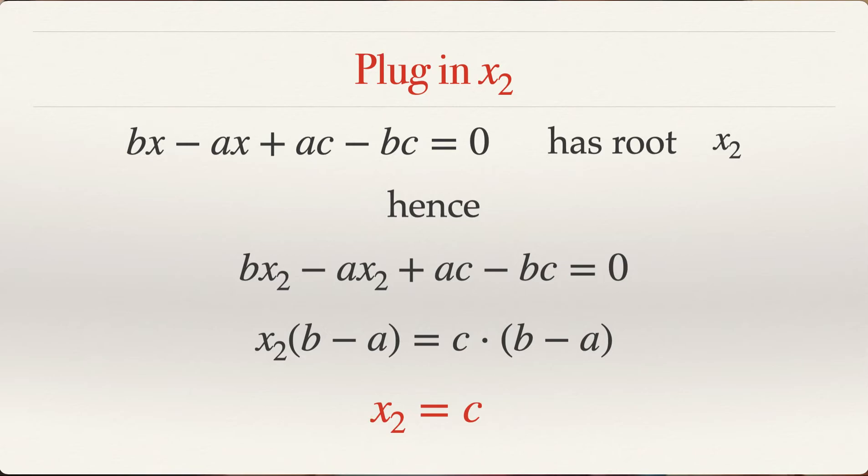Why? Because b and a are not equal to each other, right? A, b, c are all distinct. That is given. We are using that fact here. So b minus a is not equal to zero. We can cancel it off from both sides. So x2 is equal to c. Excellent. We found the first important nugget of information in this problem.